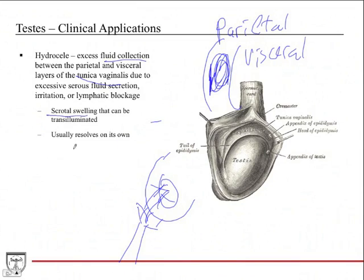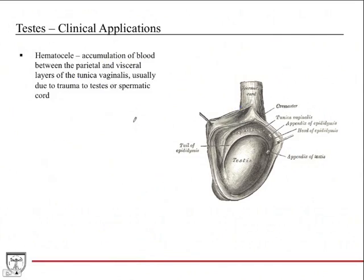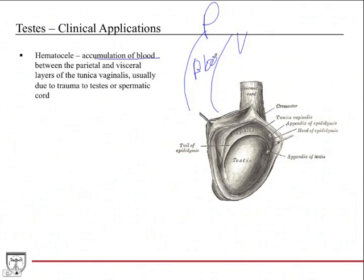The good news is hydroceles usually resolve on their own without treatment — it's a much less serious condition than testicular torsion. A hematocele is very similar to a hydrocele, except instead of serous fluid, it's an accumulation of blood between those parietal and visceral layers. This is usually due to trauma to the testes themselves or to the spermatic cord.